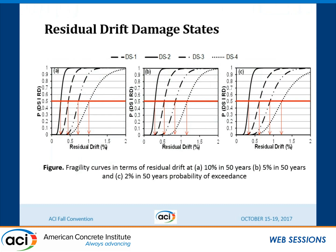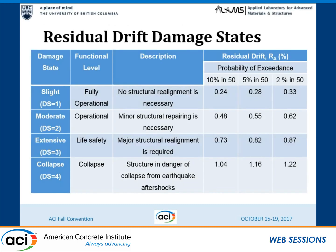Using the IDA data, we developed fragility curves for residual drift at different damage states for each hazard level, and took the 50% probability of exceedance for each damage state. These are our damage states in terms of residual drift. From the finite element analysis using a fiber element approach, we obtained residual damage and maximum drift. The question is whether we can predict residual drift from maximum drift, or vice versa.